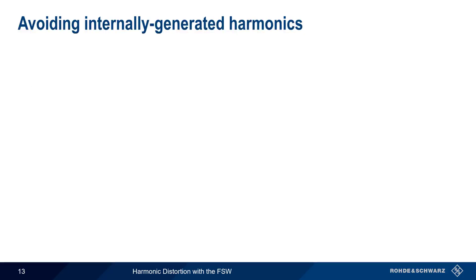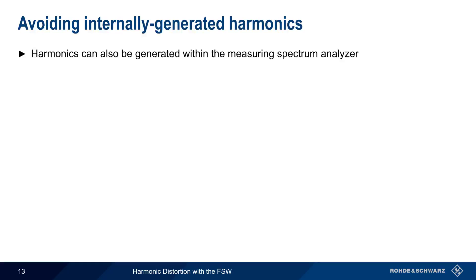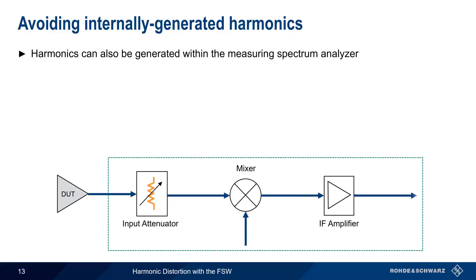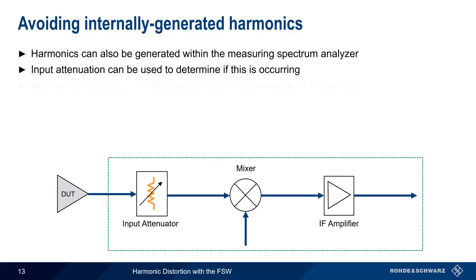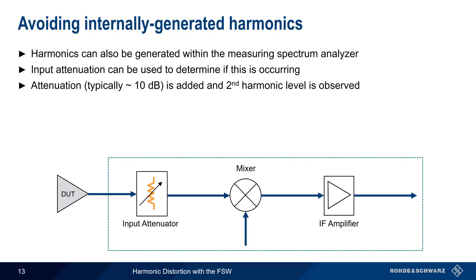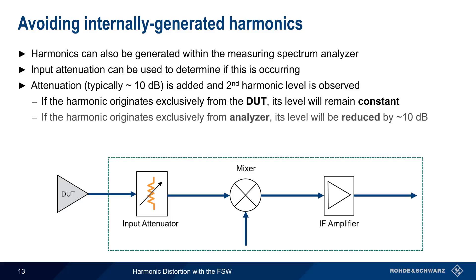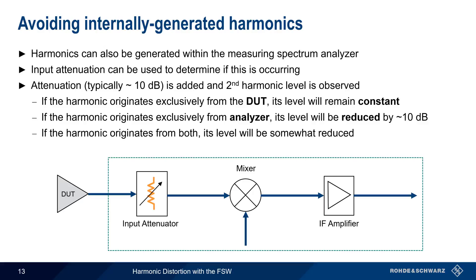One potential source of measurement inaccuracy comes from the fact that harmonics can sometimes be generated within the spectrum analyzer itself. When the DUT's signal enters the spectrum analyzer, it first passes through a passive input attenuator, but then passes through numerous active devices such as mixers and amplifiers, which can create harmonic distortion. An easy way to check if this is happening is to use input attenuation. Normally, about 10 dB of attenuation is added and the measured second harmonic level is observed. If the harmonic is exclusively from the DUT, its level will remain constant. If it originates exclusively from within the analyzer's active components, attenuating the input by 10 dB will reduce the measured harmonic level by approximately 10 dB. If the harmonic originates from both, its level will be somewhat reduced by adding input attenuation.